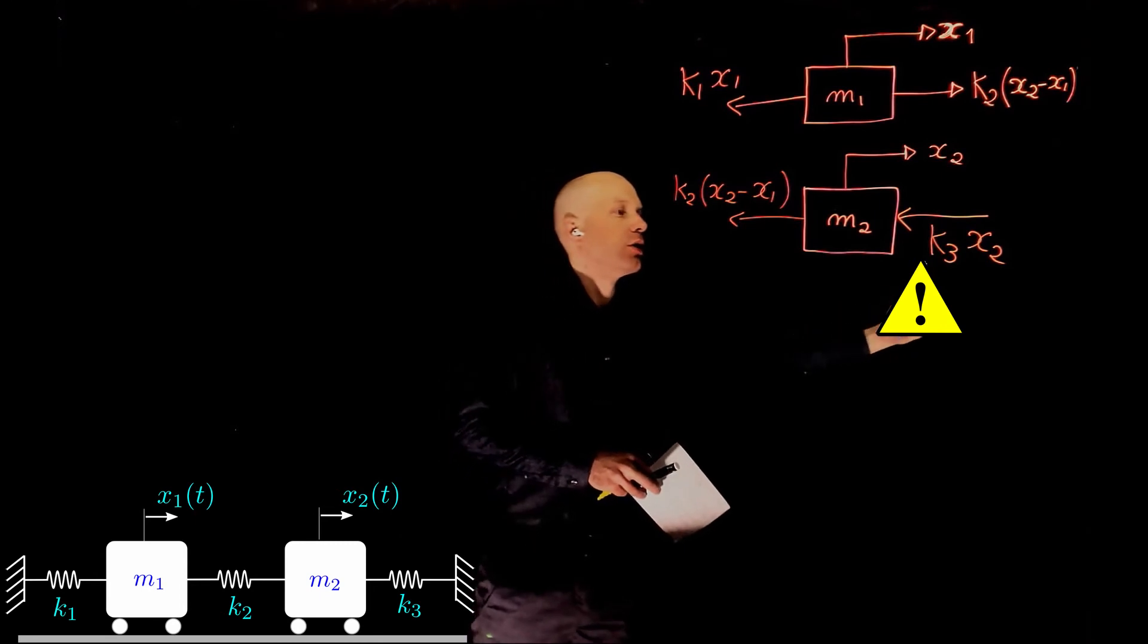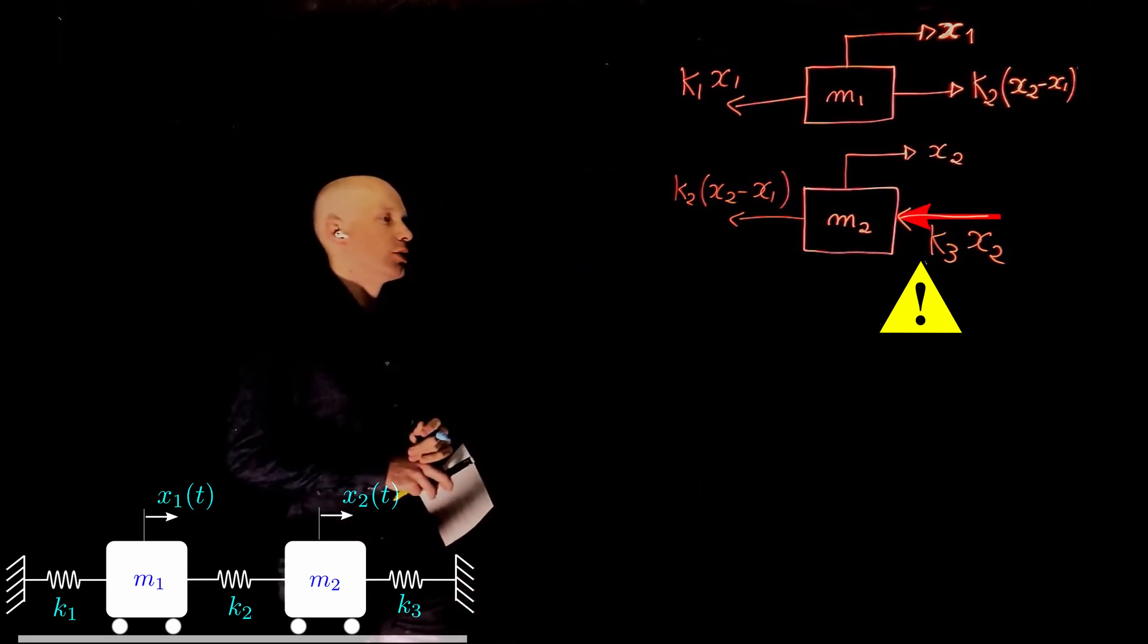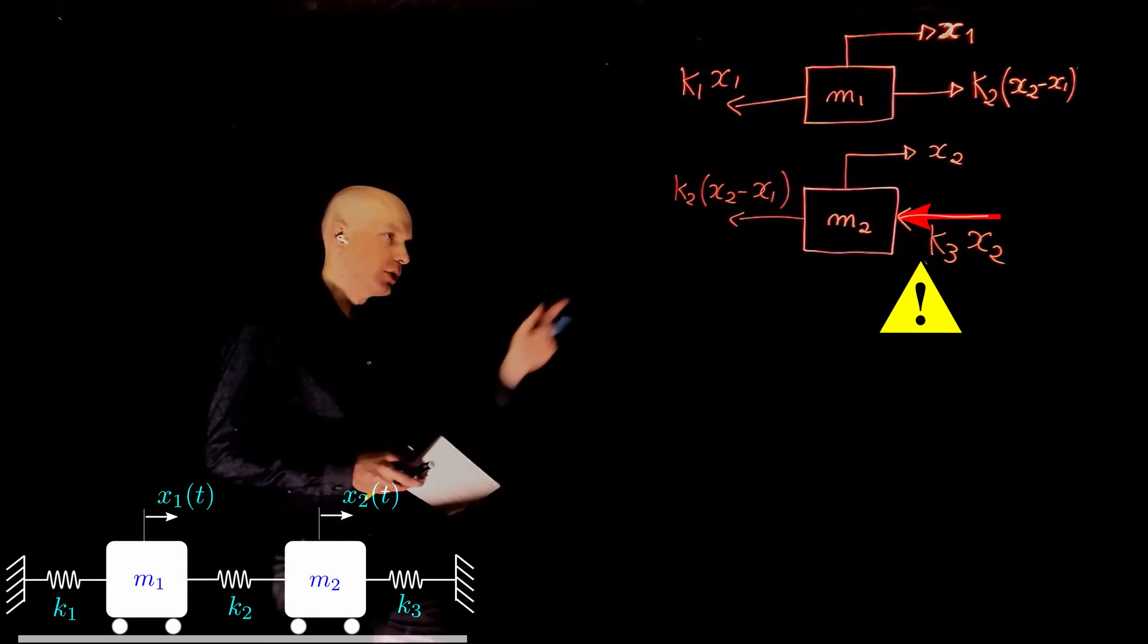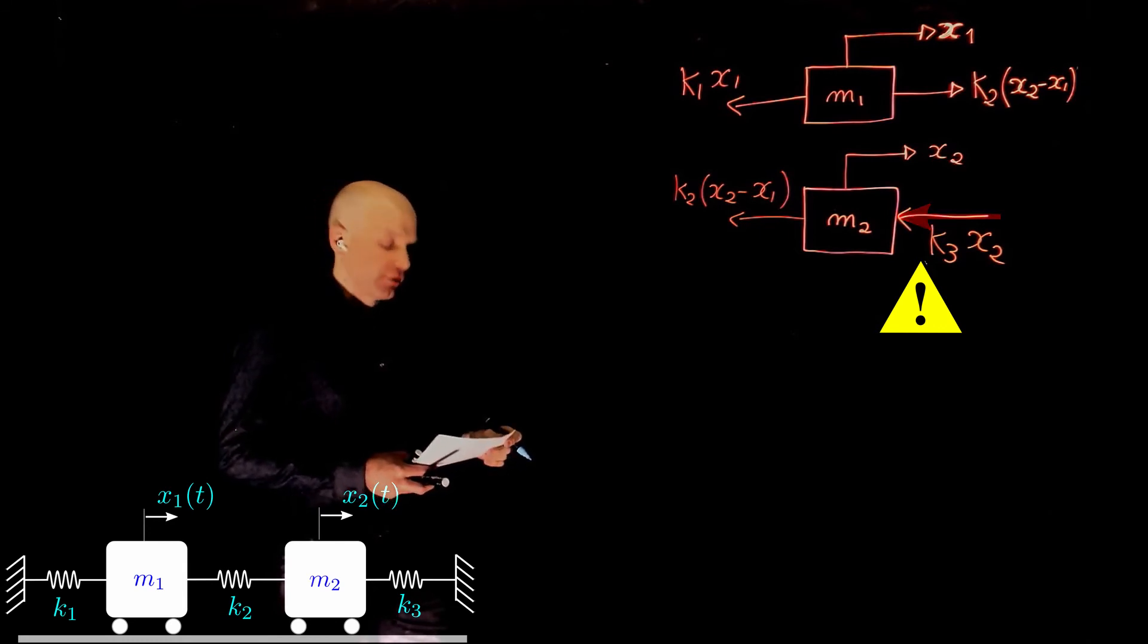it compresses the spring, the spring resists motion and pushes back, hence the arrow points to the left.